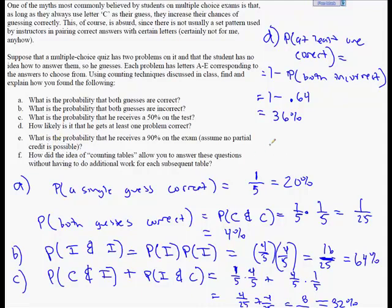Part E, you want to know what is the probability that he receives a 90% on the exam? Assume no partial credit is possible. Well, if you think about it, he either gets one right or both correct. And if he gets both correct, that's 100%. If he only gets one right, that's 50%. And if he doesn't get any of them correct, that's 0%. So this is not possible. You can't get a 90% with only two problems and no partial credit. You either get a 0%, you get them both wrong, 50%, get one right, or 100%, get both right. So it's just not a possible outcome.